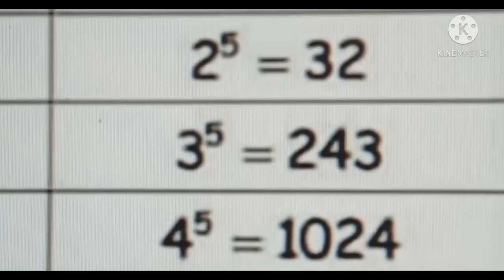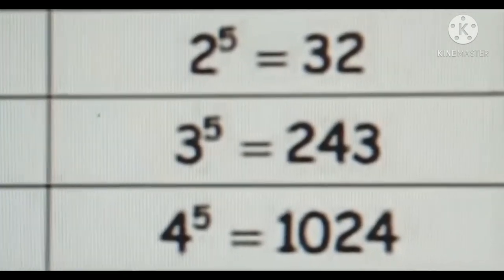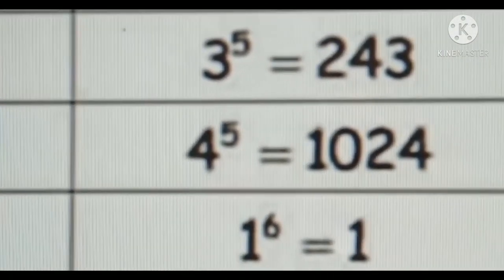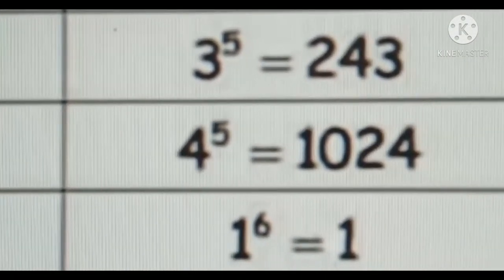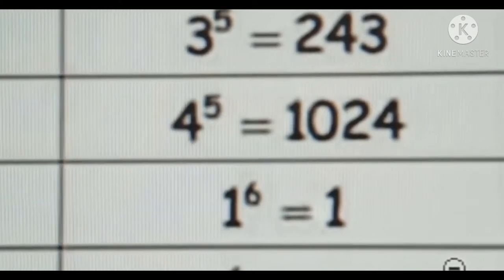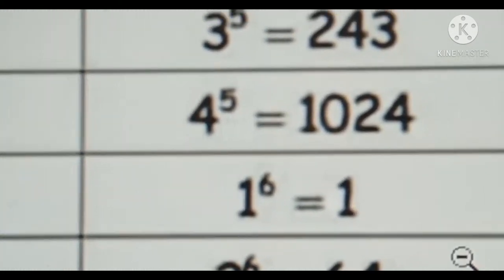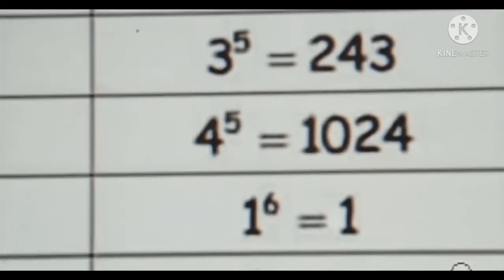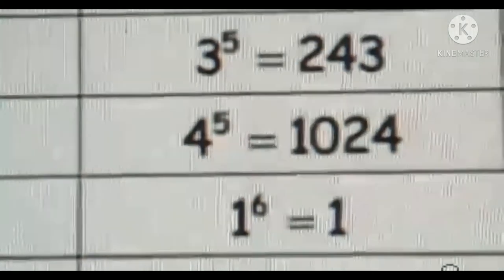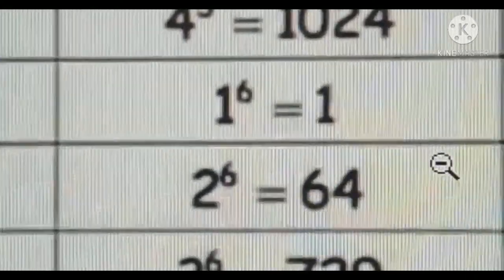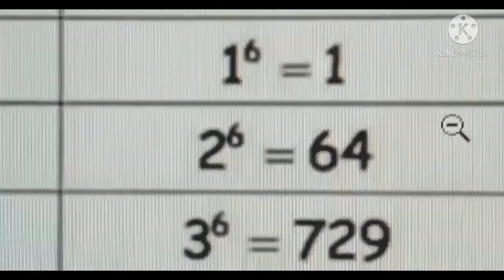1 to the power of 5 is equal to 1, 2 to the power of 5 is equal to 32, 3 to the power of 5 is equal to 243, 4 to the power of 5 is equal to 1024. 1 to the power of 6 is equal to 1, 2 to the power of 6 is equal to 64.